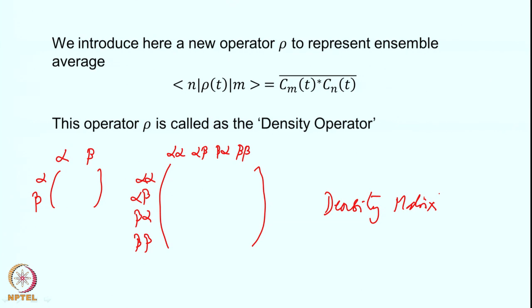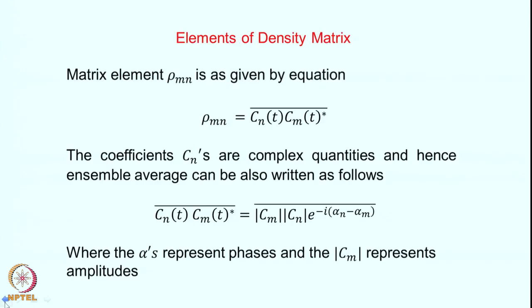As you go to larger and larger spin systems, the density matrix also becomes larger and larger. We now need to understand the density matrix more clearly. A particular element of the density matrix is: ρ_mn = C_n(t)·C_m*(t).